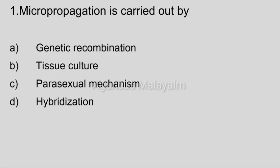First question: Micropropagation is carried out by? Option A: Genetic Recombination. Option B: Tissue Culture. Option C: Parasexual Mechanism. Option D: Hybridization. Correct answer: Option B, Tissue Culture.